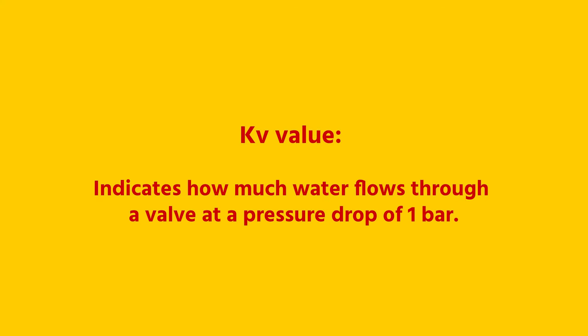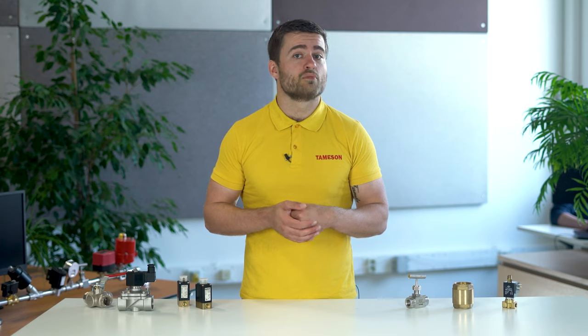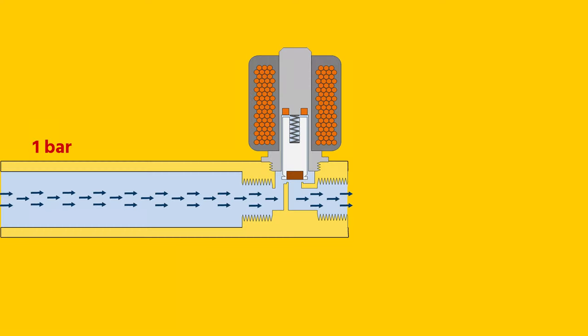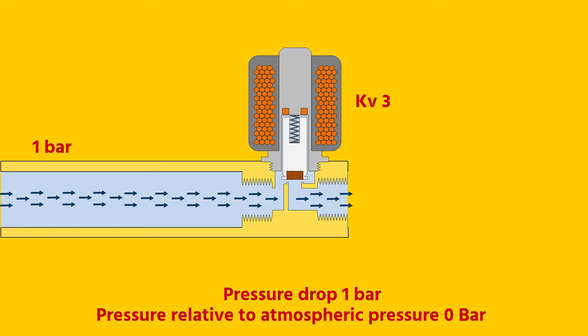The KV value indicates how much water flows through the valve at a pressure drop of 1 bar, indicated in cubic meters per hour, but can easily be converted to liters per minute. For example, suppose you have a water pipe with a pressure of 1 bar. At the end of the pipe is a valve connected with a KV value of 3. The pressure drop is then 1 bar because the valve is connected to the outside air, so the pressure relative to the atmospheric pressure is 0. The KV value of 3 means that the liquid flow through the valve will be 3 cubic meters per hour.